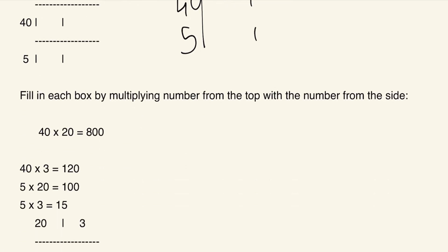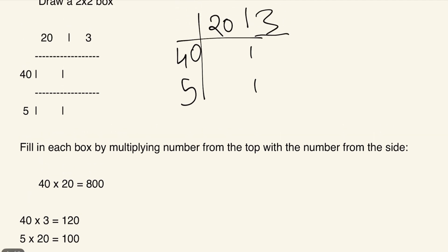So in the boxes: 40 times 20 equals 800, 40 times 3 equals 120, 5 times 20 equals 100, and 5 times 3 equals 15.